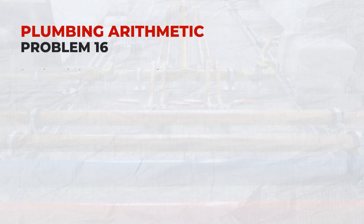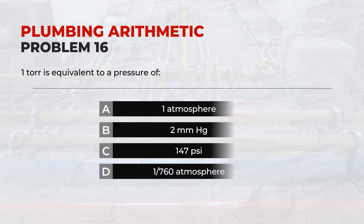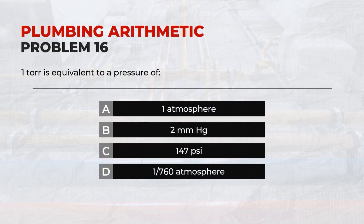1 torr is equivalent to a pressure of: D. 1/760 atm.